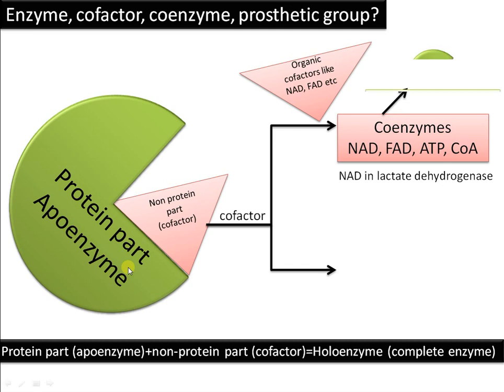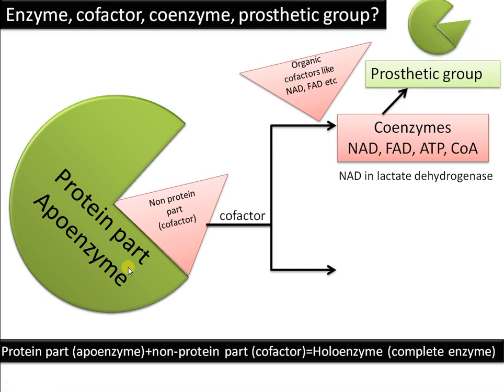If the cofactor is covalently or tightly bound to the protein part, it is called a prosthetic group. A prosthetic group cannot be detached from the protein part — it is tightly bound, and removing it will denature the enzyme.